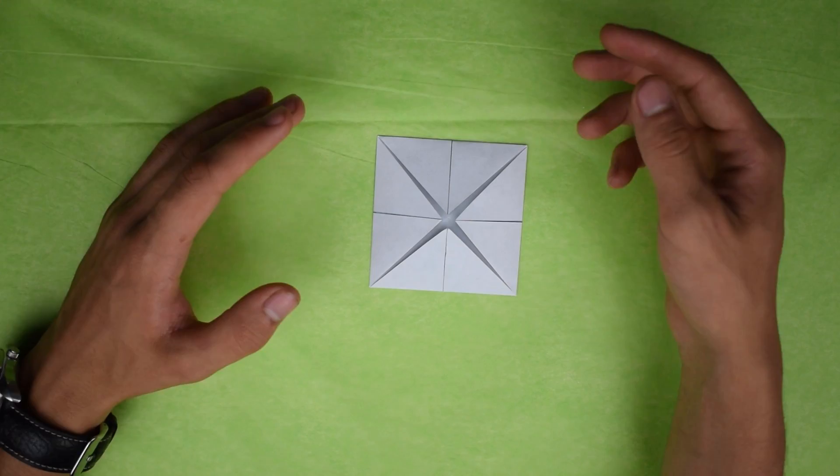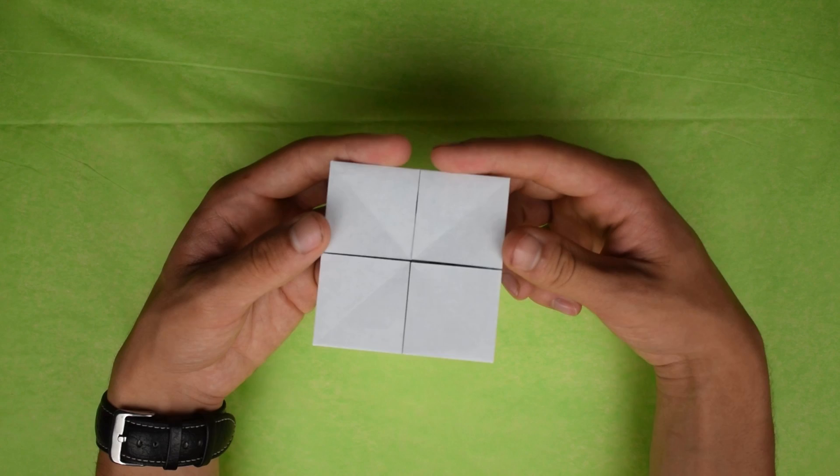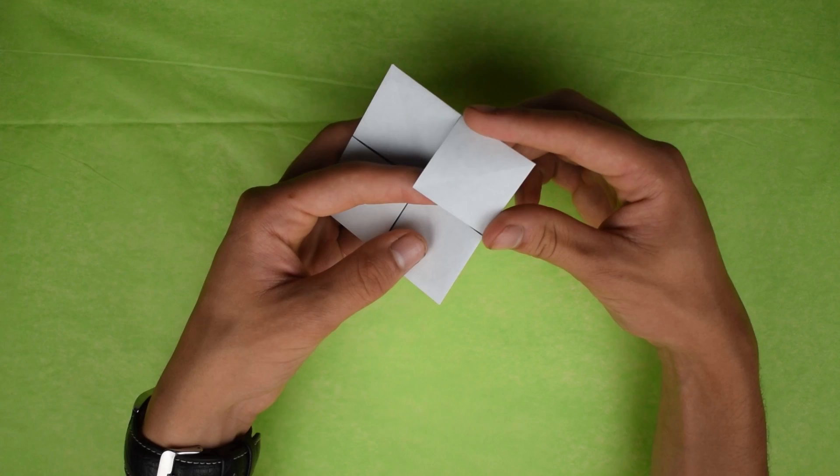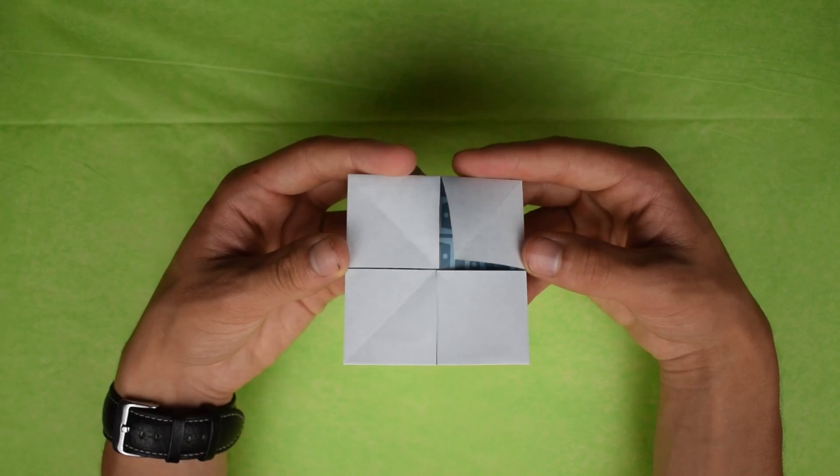Alright, you can see we have these kind of four flaps going around breaking this model up into quadrants. Basically, what we're going to do is we're going to pinch on either side of one of the quadrants like this. And I might need to use a finger to help open this up. So it kind of forms a pocket like that. We're going to want to do that for all of them.